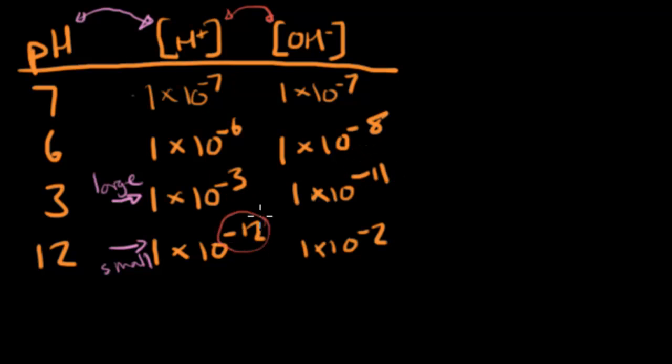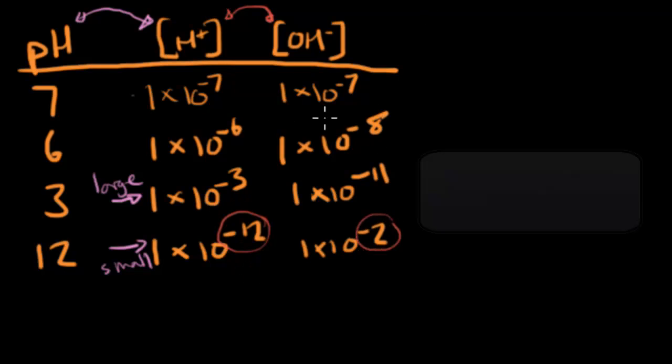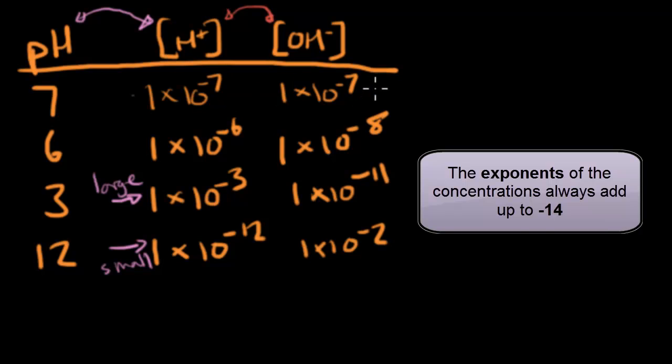If I add negative 12 and negative 2, well, you're starting to get the idea. Again, negative 14. So the exponents of the concentrations always add to negative 14.